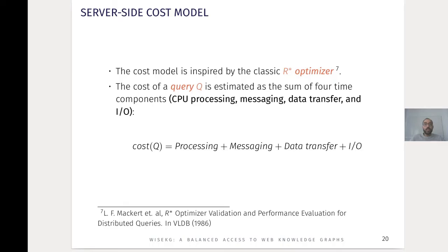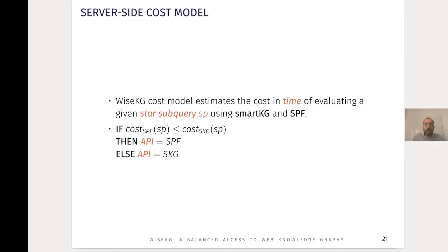Now we will have a look at YSKG's cost model. Our cost model is inspired by the classic R* optimizer, which was originally made for distributed systems. The cost of a query is estimated as the sum of four time components: CPU processing, messaging, data transfer, and input/output operations. YSKG's cost model estimates the cost in time of evaluating a star pattern using SmartKG or SPF. If the cost of SPF is less than or equal to the cost of SmartKG, then we use the SPF API; otherwise we use the SmartKG API.